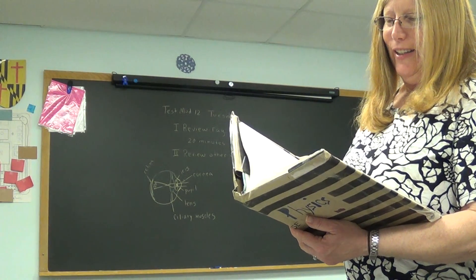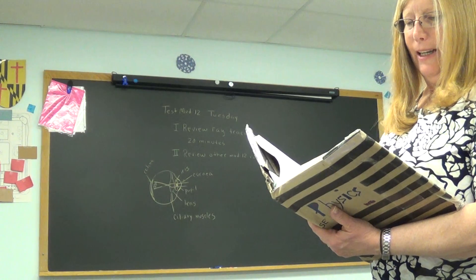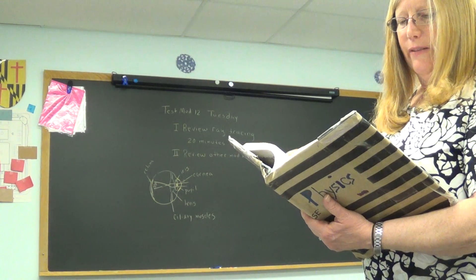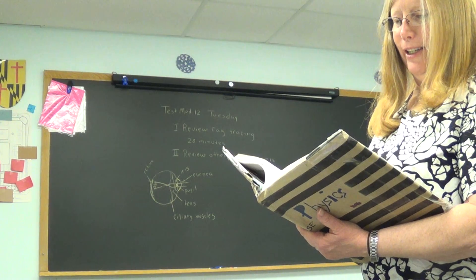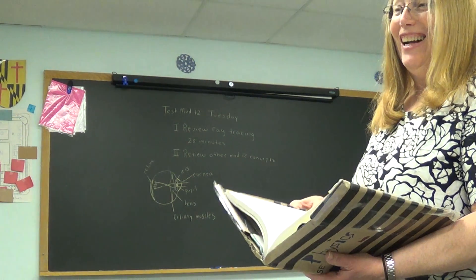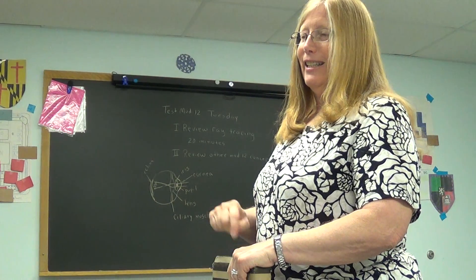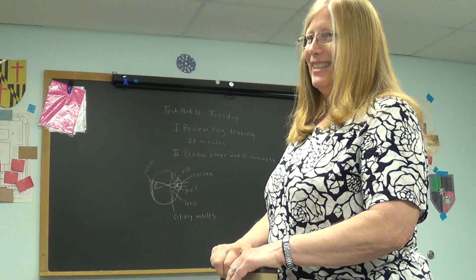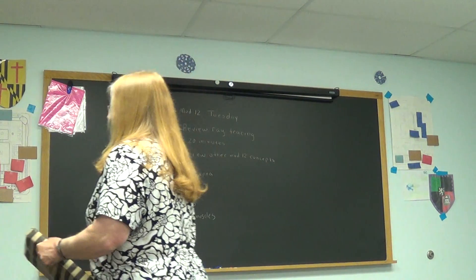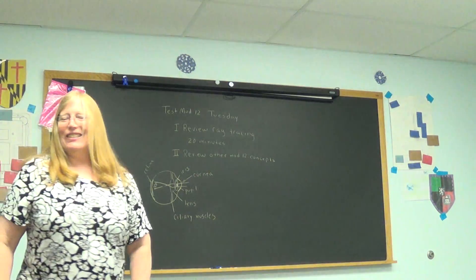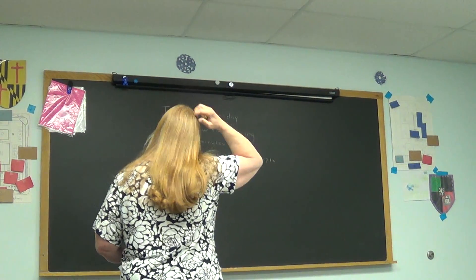To suppose that the eye, with all its inimitable contrivances, for adjusting the focus to different distances, for admitting different amounts of light, and for the correction of spherical and chromatic aberration, could have been formed by natural selection, seems, I really confess, absurd in the highest degree. But somebody, one of my students one year went to that reference and said that what the book said was totally out of context, and that wasn't what he meant at all.